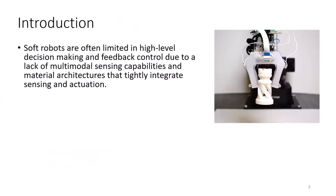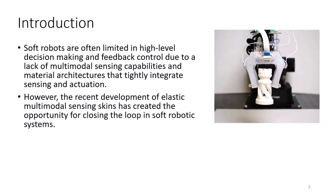Soft robots are often limited in high-level decision making and feedback control due to lack of multimodal sensing capabilities and material architectures that tightly integrate sensing and actuation. However, the recent development of elastic multimodal sensing skins has created the opportunity for closing the loop in soft robotic systems.